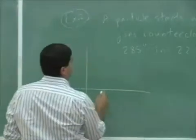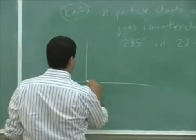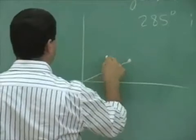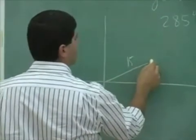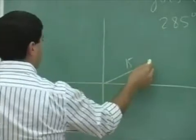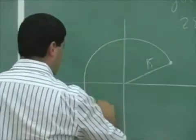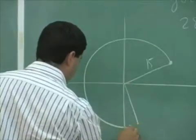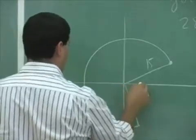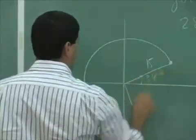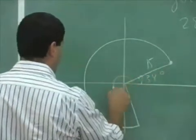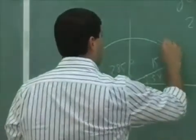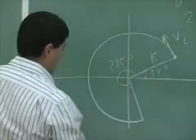So the particle starts here at 34 degrees, 15 feet, and goes counterclockwise this way until it ends up at 285 degrees. So here's 34, the whole thing is 285. The initial velocity is like this, the final velocity is like that.